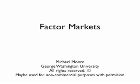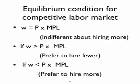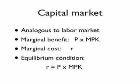We want to use factor market analysis to see how changes in prices will affect the incomes to factors in a particular market. We'll start with the simple example of only two factors, labor and capital, with the relevant equilibrium for labor: W equals price times MPL. For capital, it's R equals price times MPK.